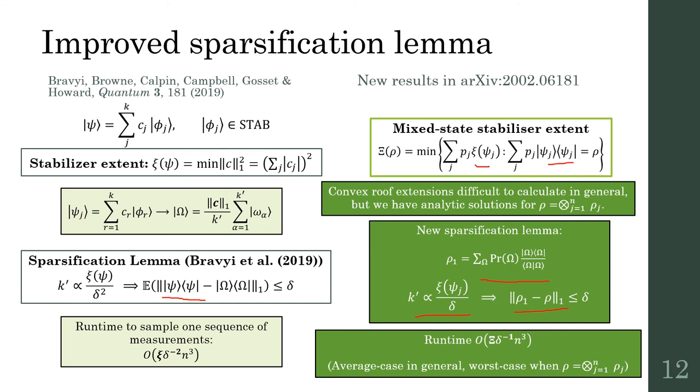For our mixed state simulator, the runtime scales with mixed state extent. This is an average case runtime in general, but for tensor product states, we show it becomes the worst case runtime, as one can find equimagical decompositions where each pure state in the ensemble has the same extent.